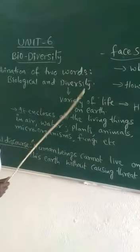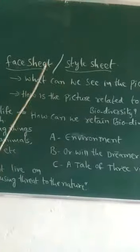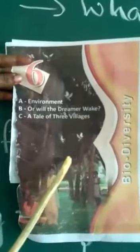Today we shall learn the theme biodiversity and the face sheet and style sheet from the unit. Open your textbooks and see the face sheet. What can we see in this? There are trees, birds, grass, and children. Here only girls are being seen. Why only girls? You can think for a while — why are girls being referred to here?